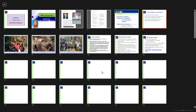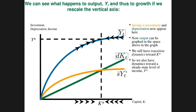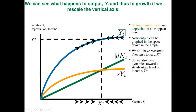We are going to talk about the steady state. In the steady state, there is no economic growth — no increase in capital output, capital per worker, or output per worker.